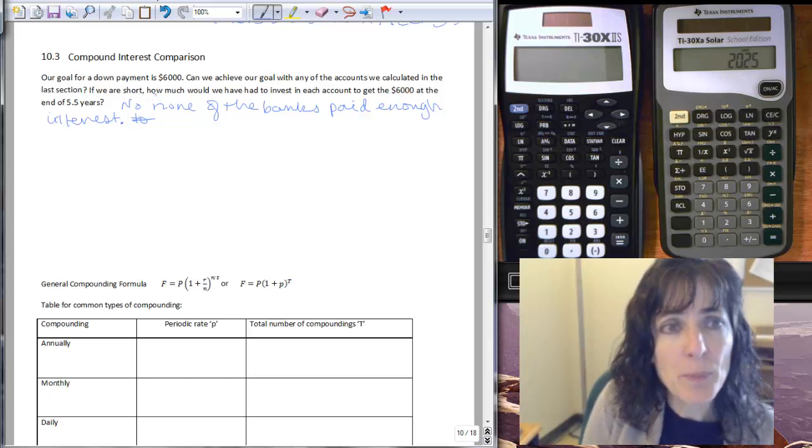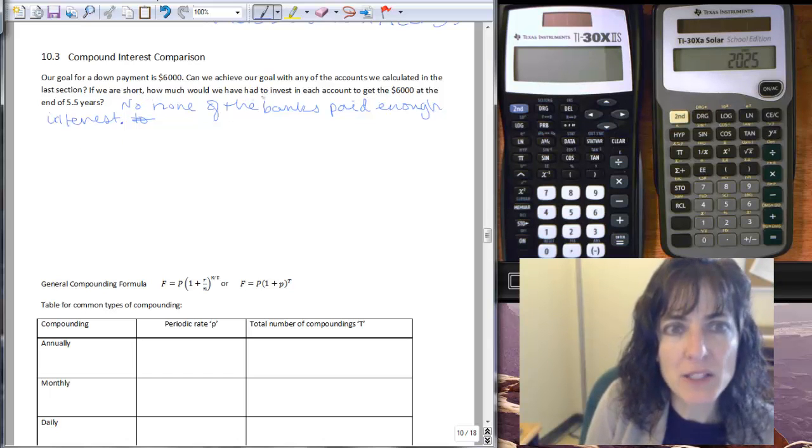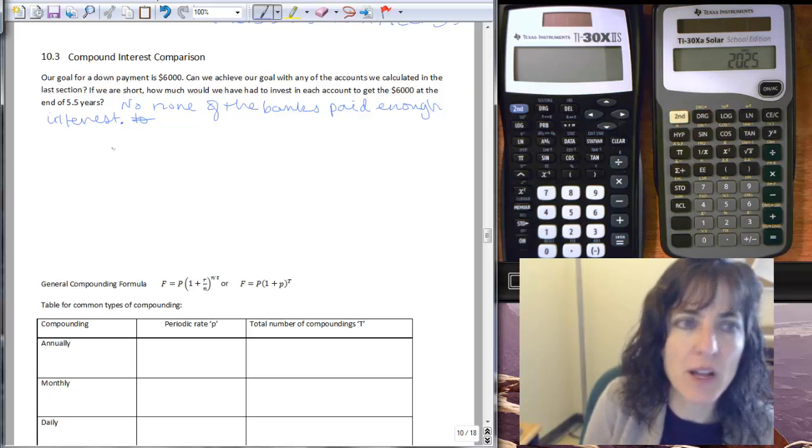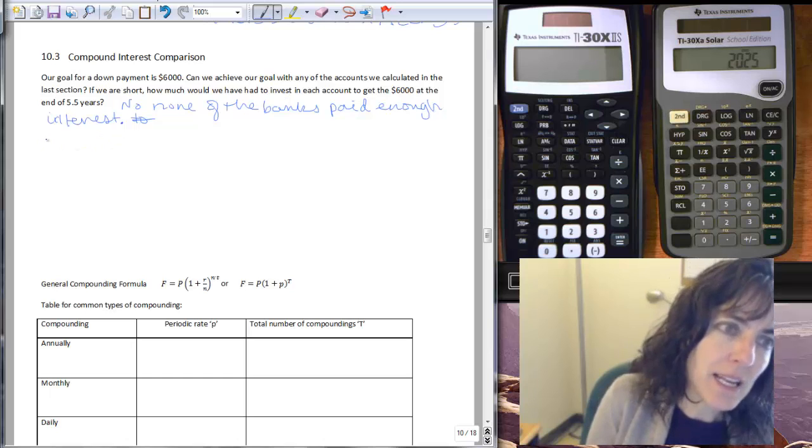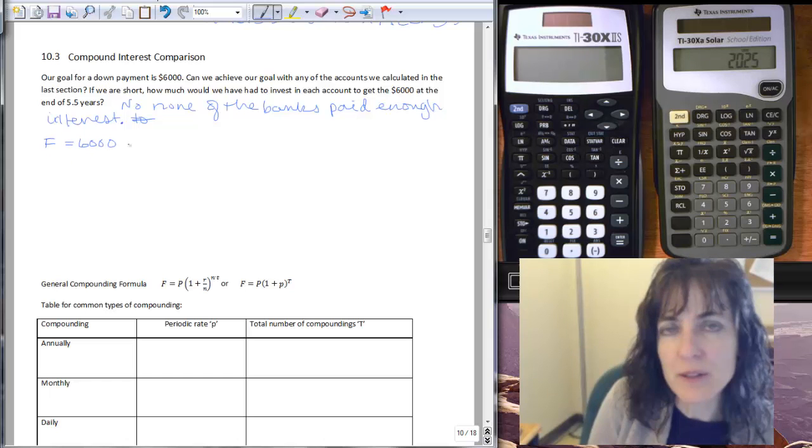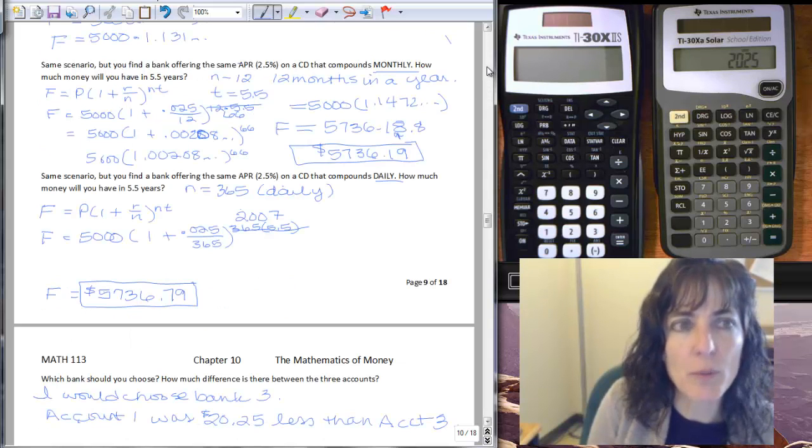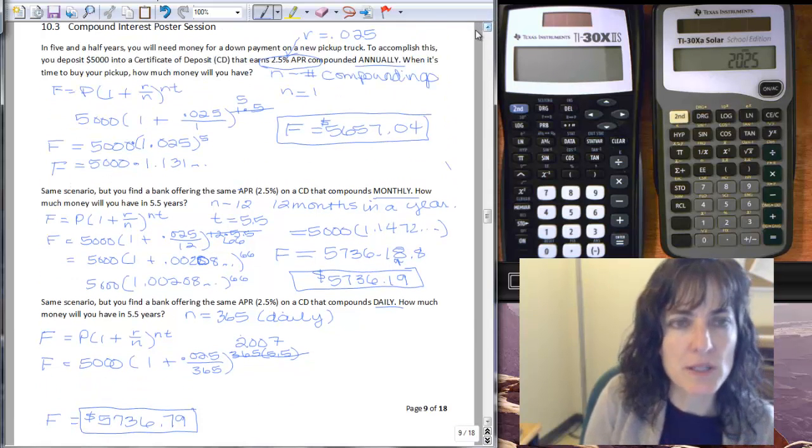Okay, if we are short, which we were, how much would we have had to invest in each account to get $6,000 at the end of five and a half years? So what we're saying now is we want our F to be $6,000 and we are using the same values for everything else, but we want to recalculate and figure out what our starting balance has to be to end up with the $6,000.